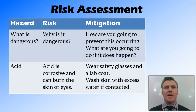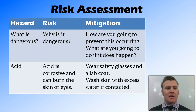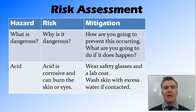The best way to set out a risk assessment is in a table, where in the first column we have the hazard, which is what is dangerous in the experiment. We then have the risk, or why it's dangerous, and the mitigation, which is how we're going to stop this from happening and what we're going to do if it does happen. In this example, I've got an experiment where I'm using acid. The hazard is the acid; the reason it's dangerous is because acid is corrosive and can burn the skin and eyes. To stop this from occurring, I'm going to wear safety glasses and a lab coat, and if it does happen, I'm going to wash the skin with excess water.